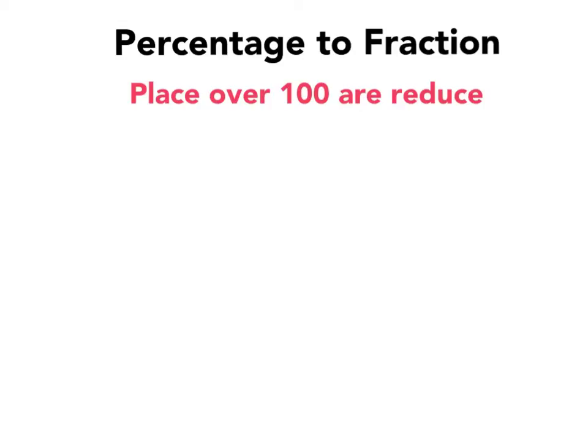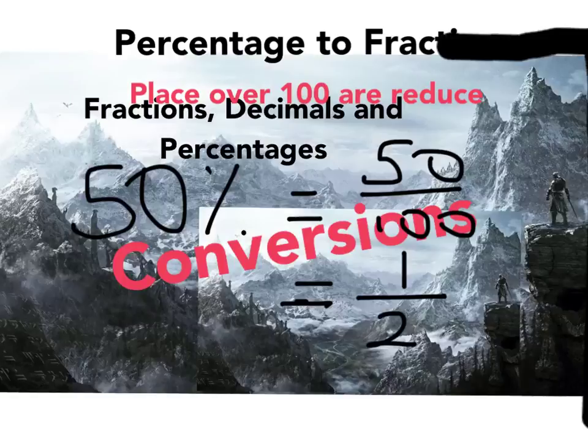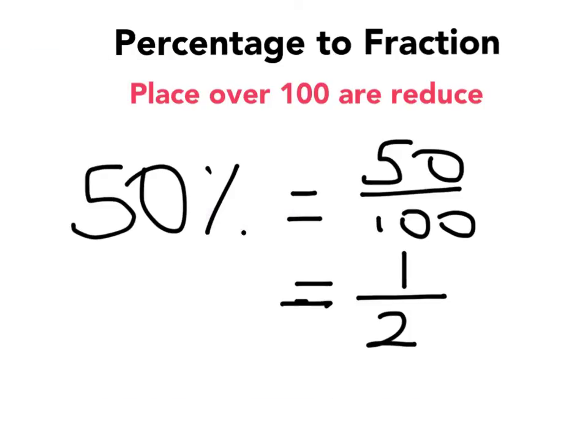Percentage to fraction. You thought the one before was easy. This one's even easier. 50%. How do I change 50% to a fraction? Put it over 100 and reduce it. 50 over 100. Highest common factor with 50 and 100 is 50. 50 goes into 50 once and into 100 twice. That's it. It's really quite straightforward.